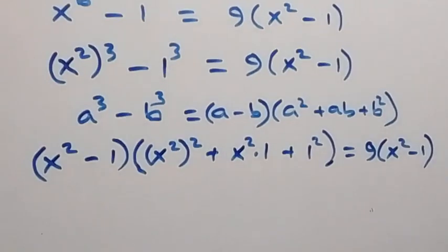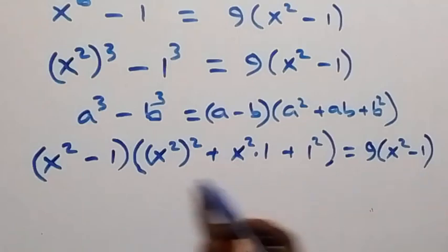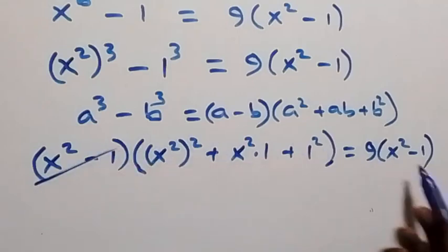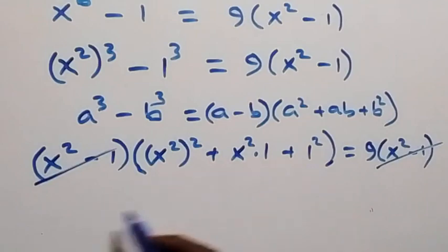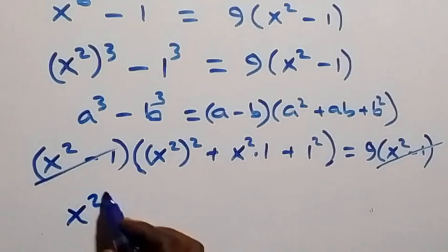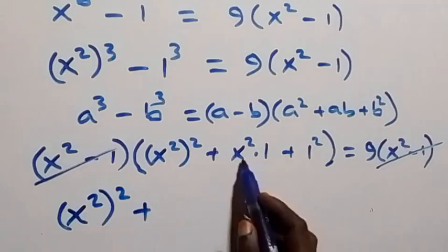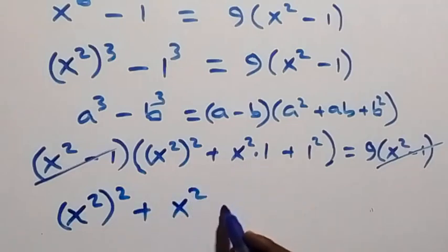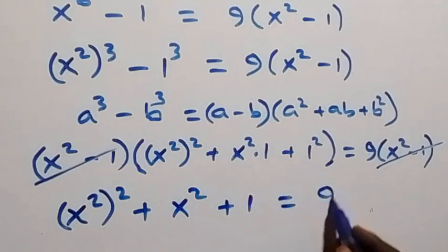Here we can simplify further. When we divide both sides by (x² minus 1), the (x² minus 1) cancels out. We are left with x⁴ plus x² plus 1 equals to 9.